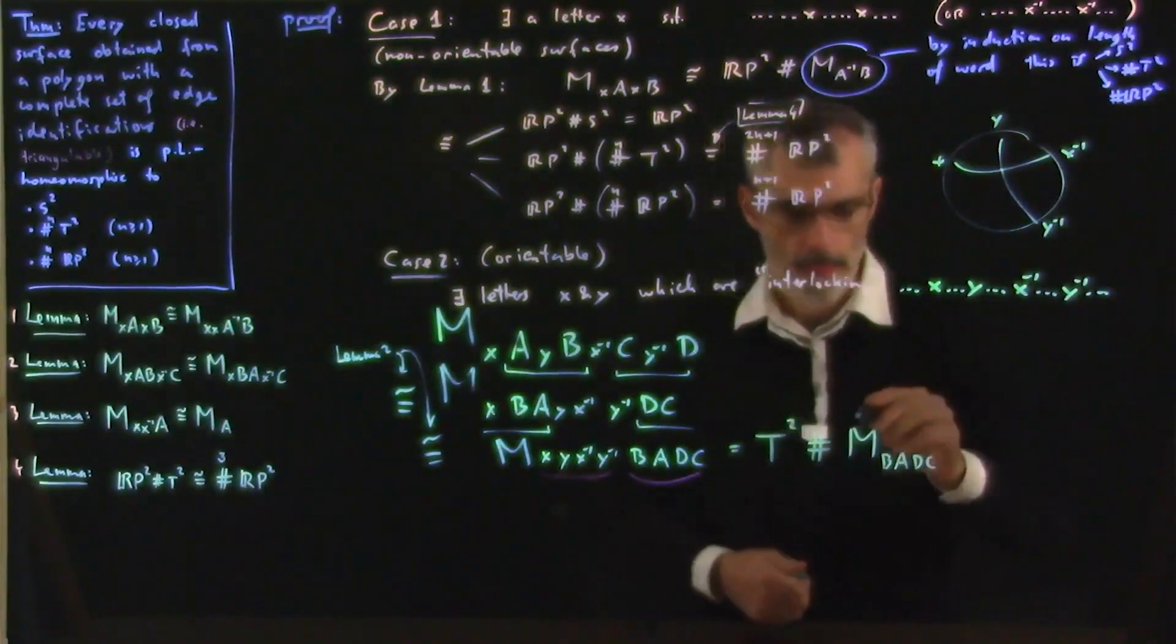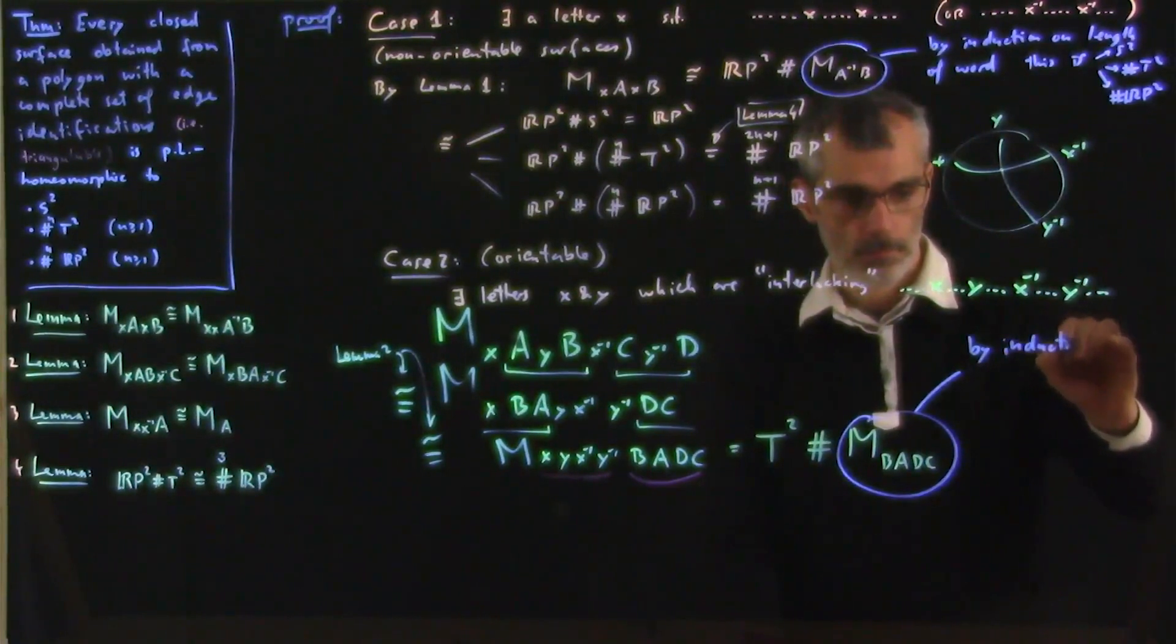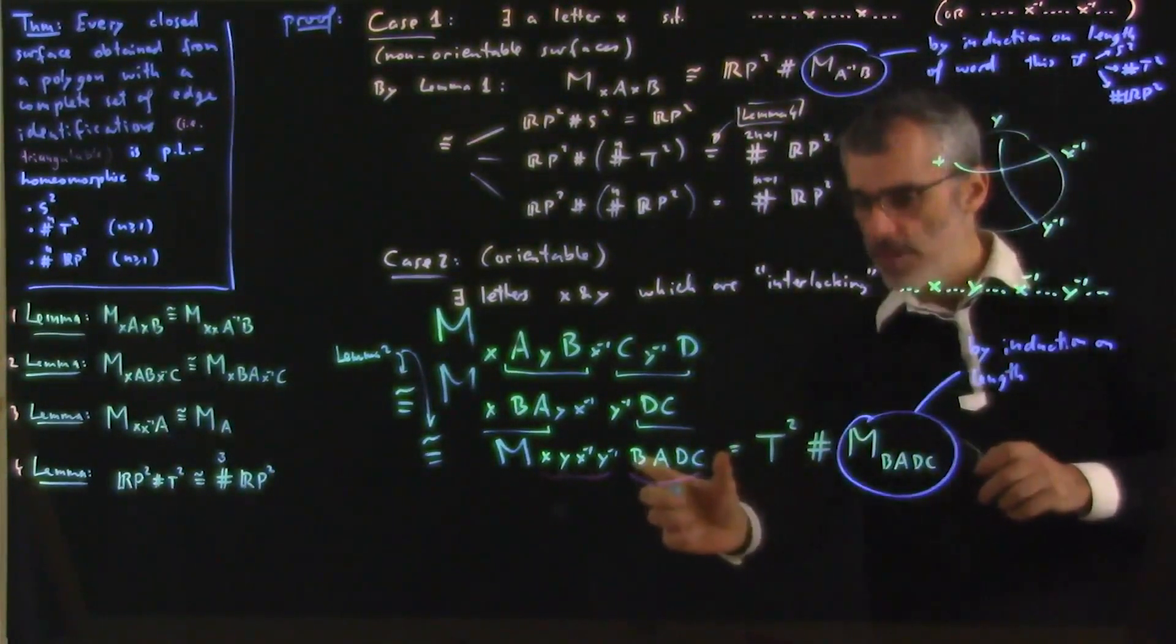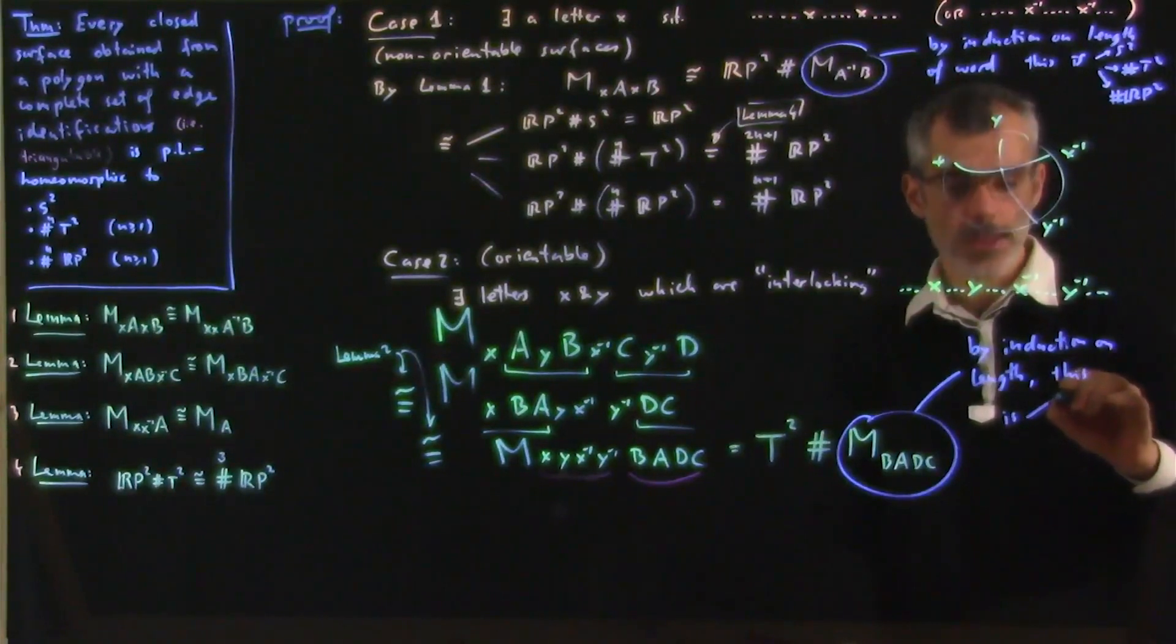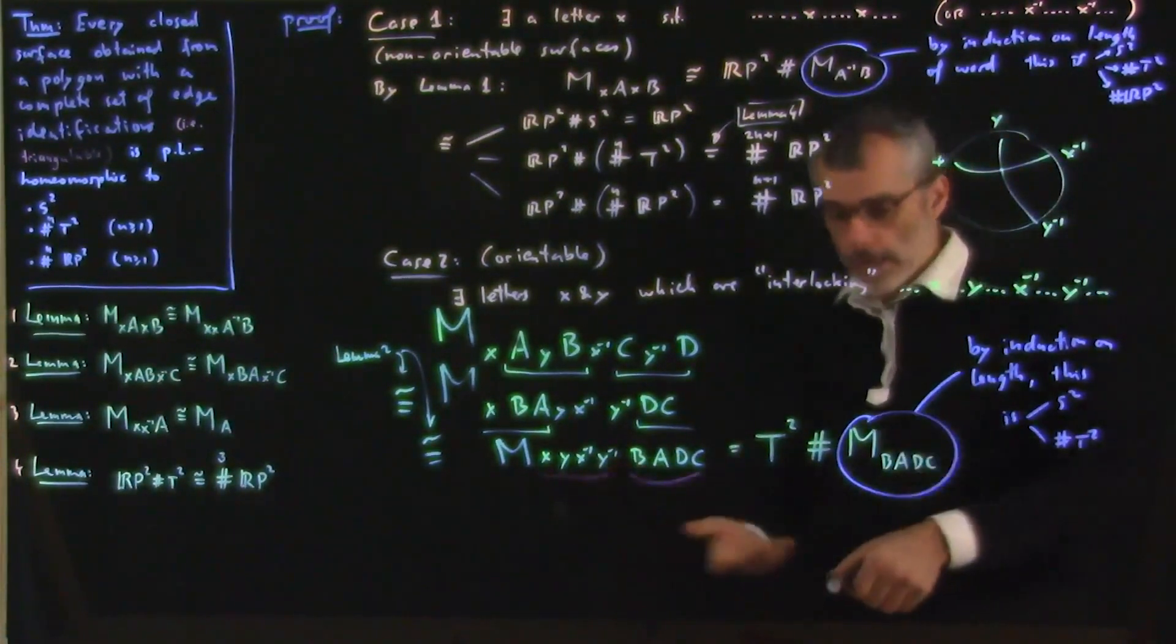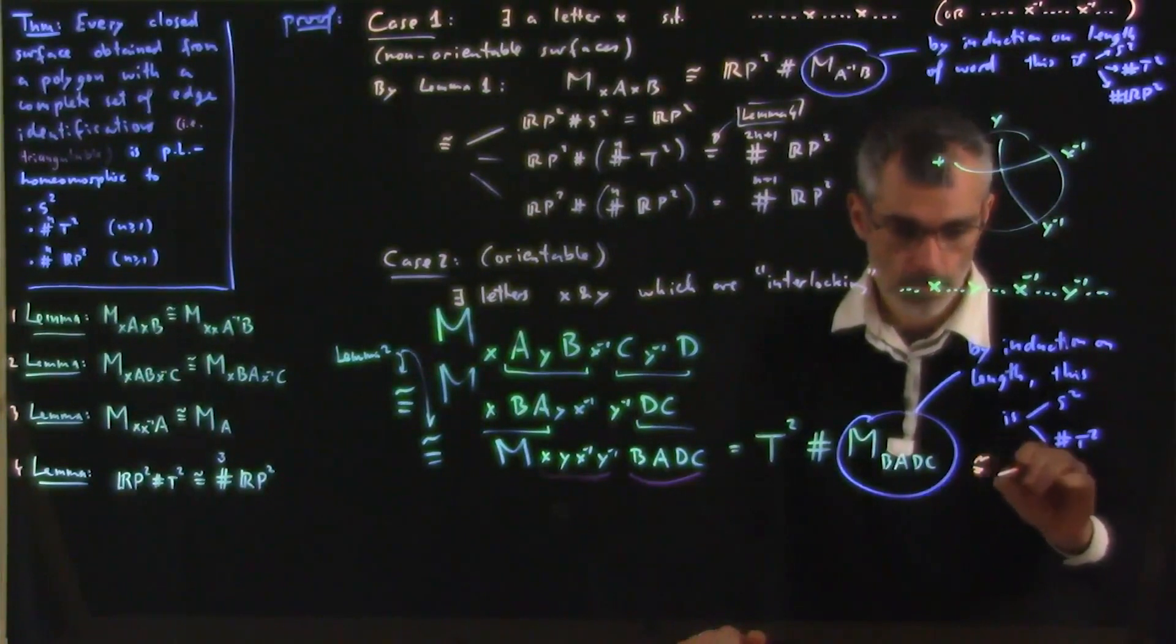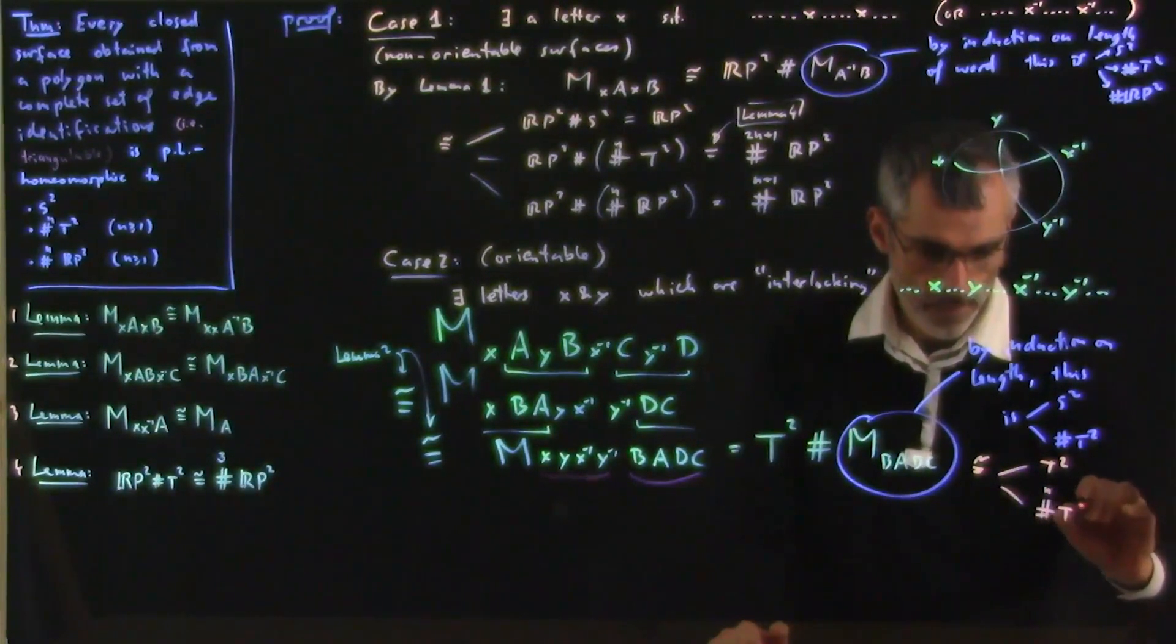And once again, we may assume by induction on the length of the word. And also, we know that this is not creating any x x's or x inverse x inverses. So we're still in the orientable case. This is either S^2 or a bunch of T^2s. And so, well, if I connect sum T^2 with S^2, that's just T^2. And if I connect sum T^2 with a bunch of T^2s, that's a bunch of T^2s.